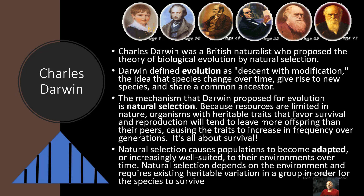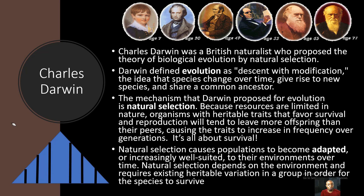Natural selection depends on the environment and requires existing inheritable variation in a group in order for the species to survive. One thing I like to compare natural selection to is high school. Think about this — in high school, you have four different grade levels: 9th grade, 10th grade, 11th grade, and 12th grade.